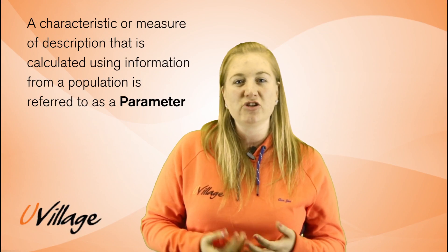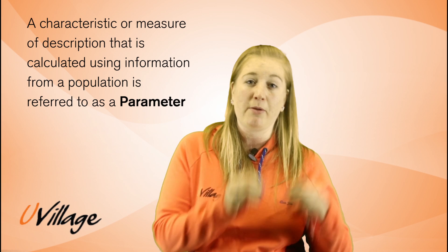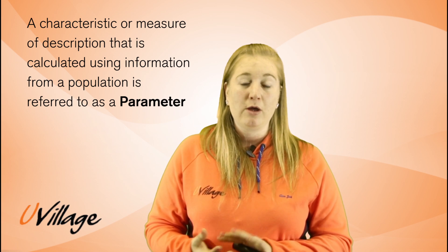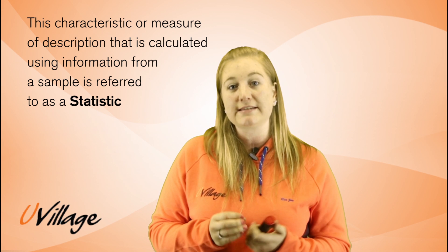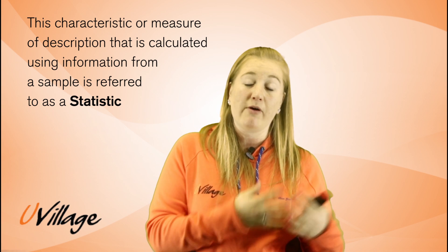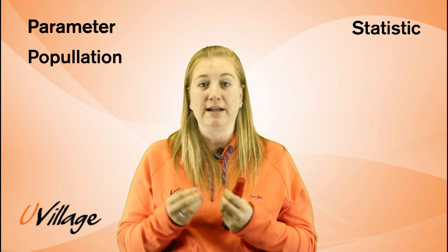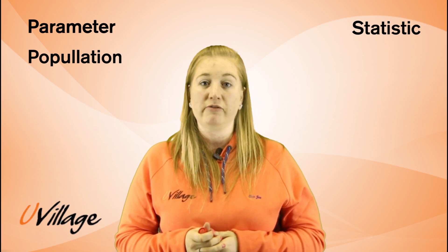Now, we have been through a lot of definitions already and it might not be making sense, but we still have two more definitions, and then hopefully everything can be put into perspective. A characteristic or measure of description that is calculated using information from the population is referred to as a parameter, whereas a characteristic or measure of description calculated using information from a sample is referred to as a statistic. The best way to remember the difference: a parameter, which starts with a P, is calculated using information from a population, whereas a statistic, which starts with the letter S, is calculated from information from a sample.